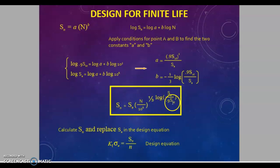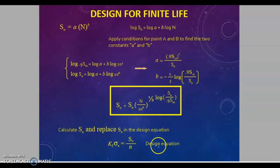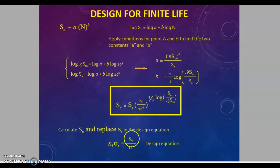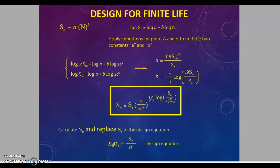SUT is the ultimate tensile strength and n is the number of cycles. Calculate SN and replace SE in the design equation. In the design equation, to calculate SA divided by n, use this equation: SN divided by n equals SA times KF, where KF is the fatigue stress concentration factor.